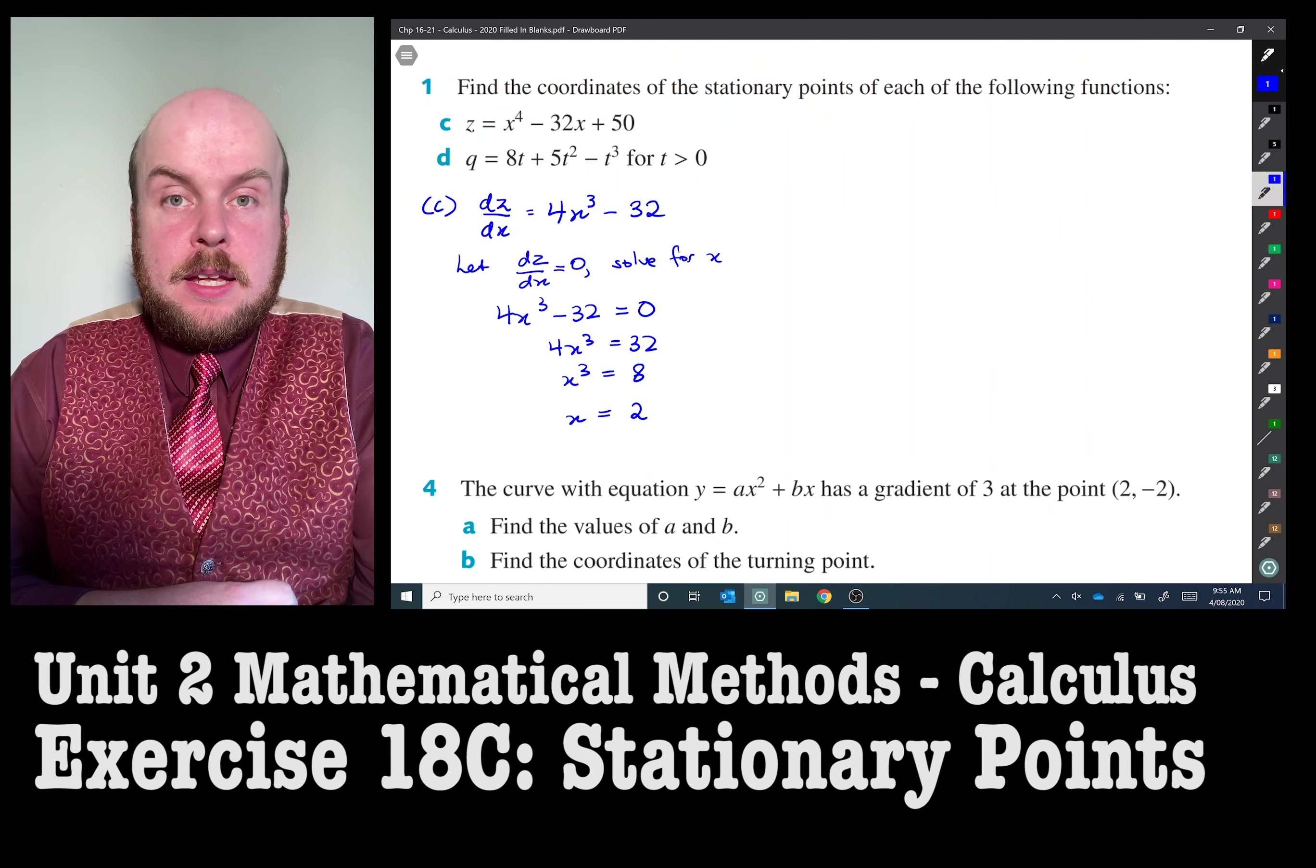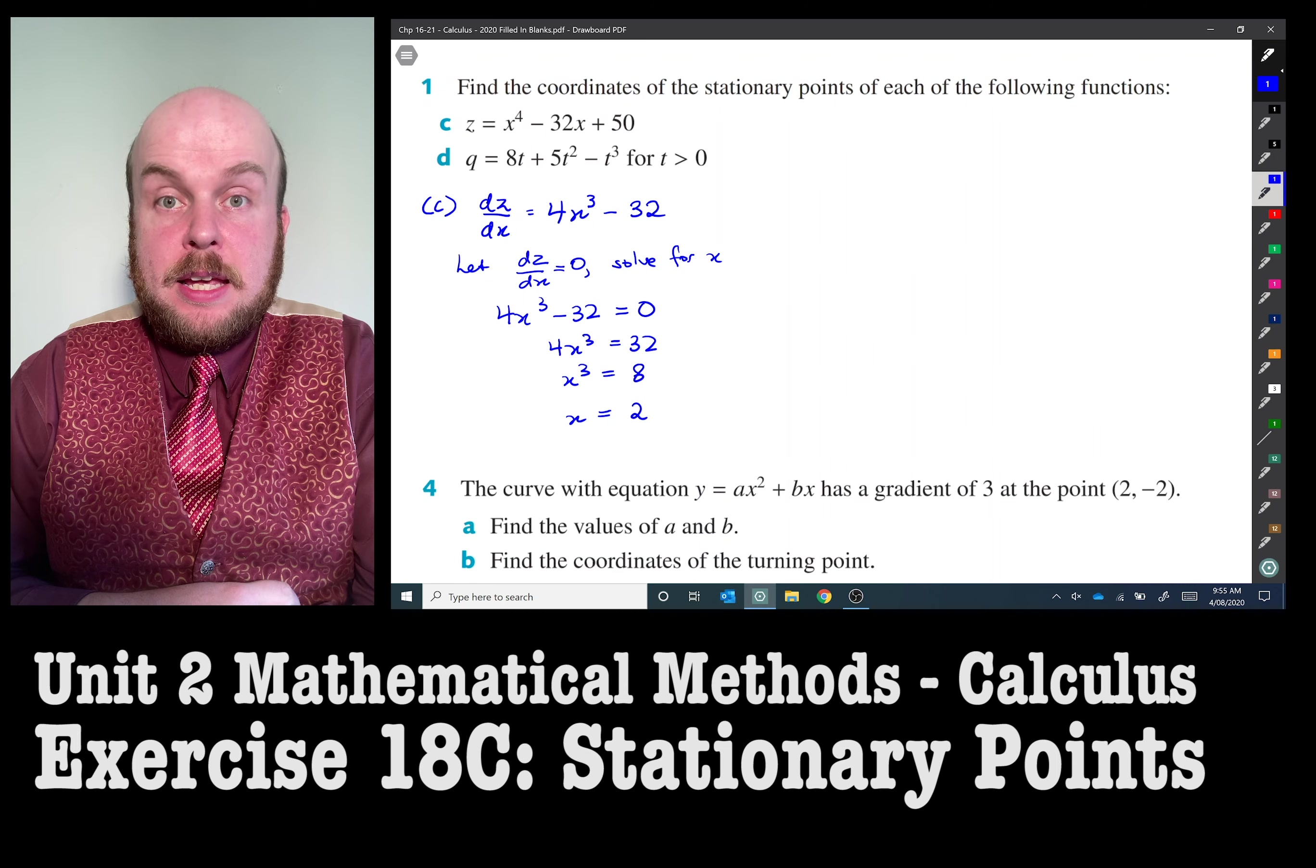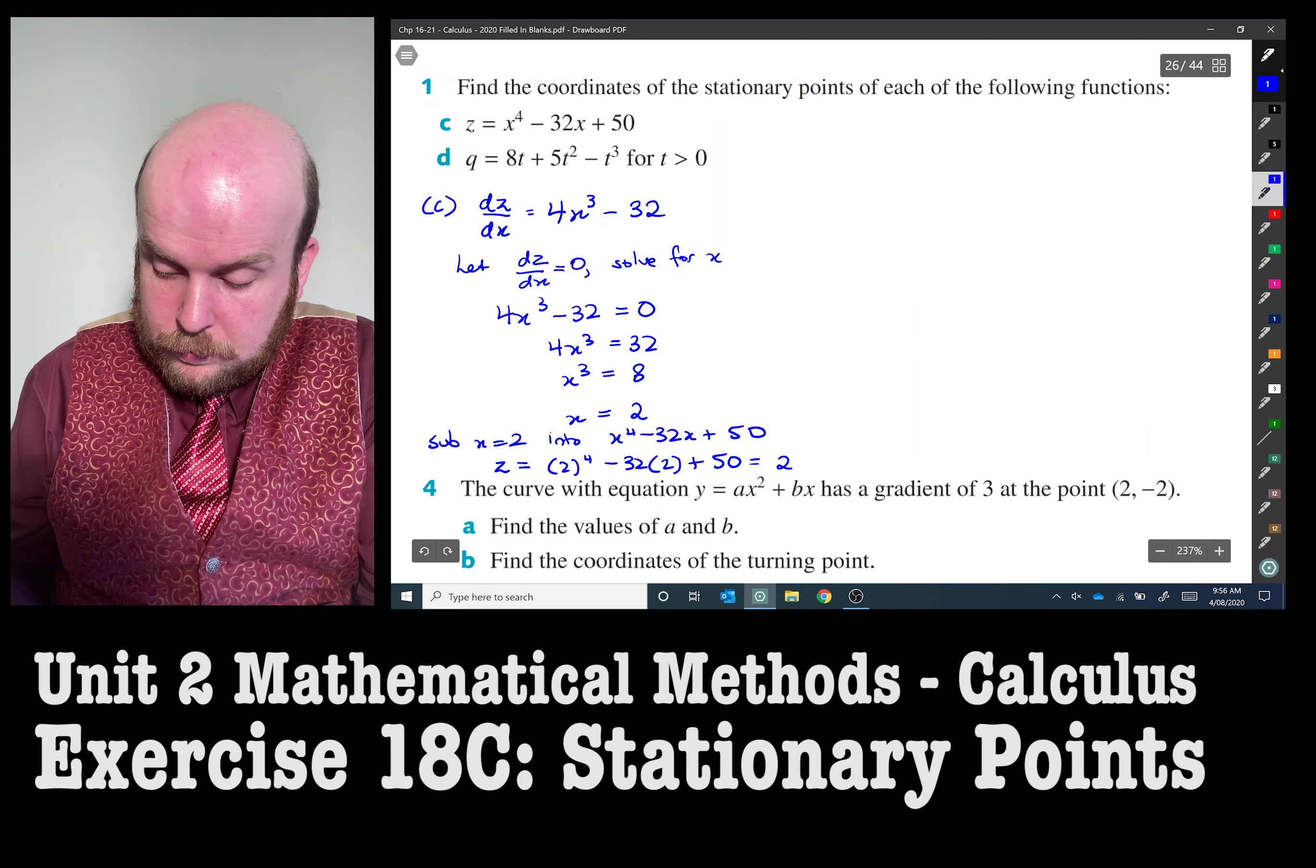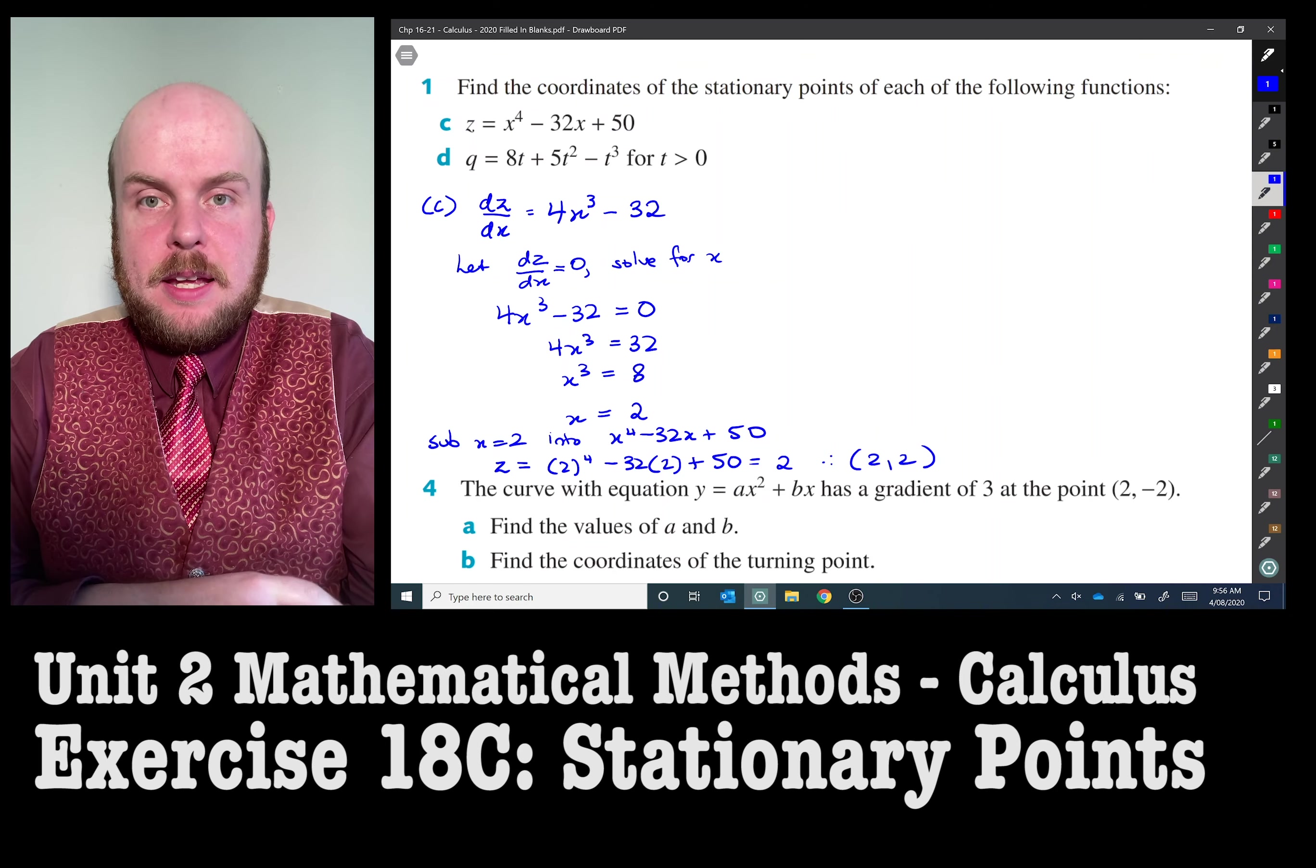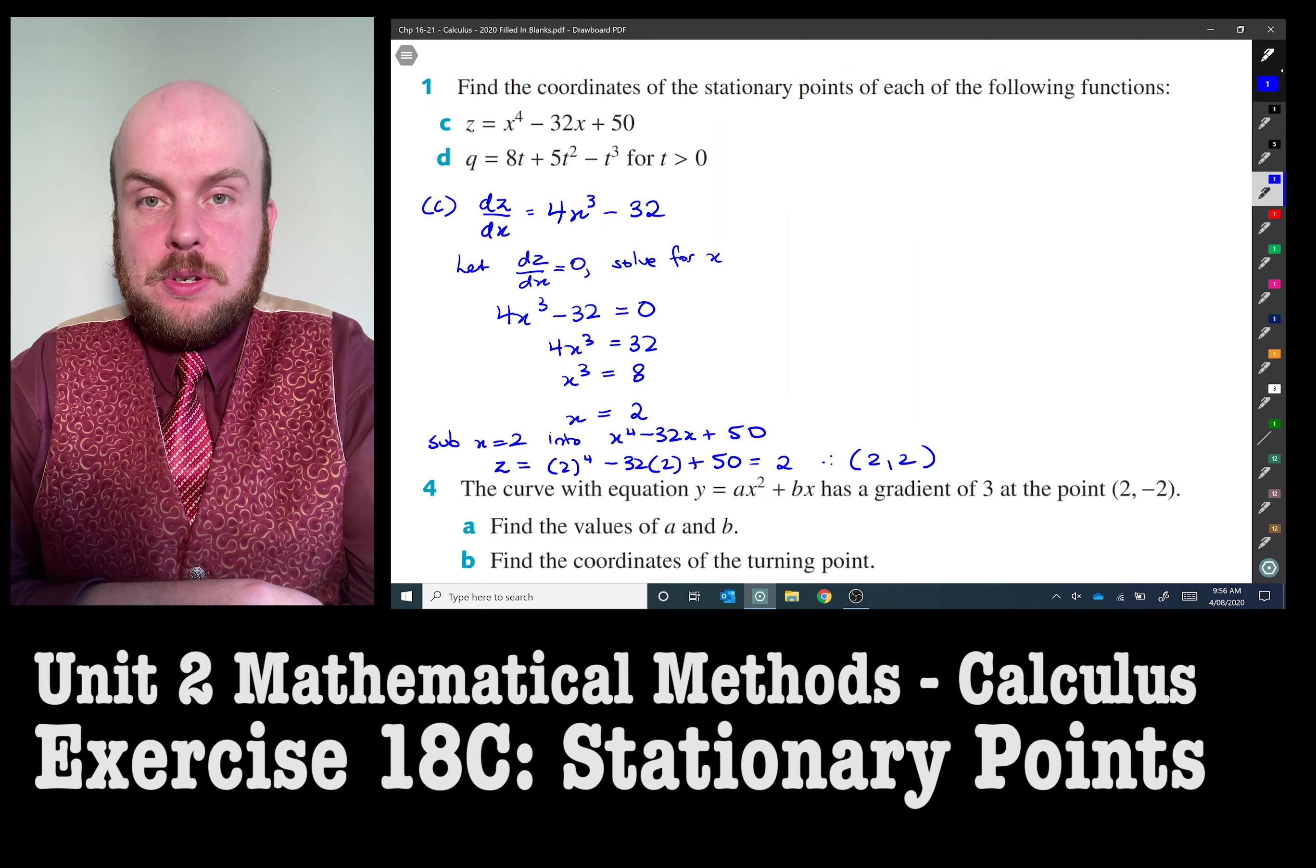So we found that the x value is equal to two, and now we just need to substitute that into the original equation to find the y value. The y ordinate of the second coordinate is two. So therefore the stationary point for this first one is at (2, 2).